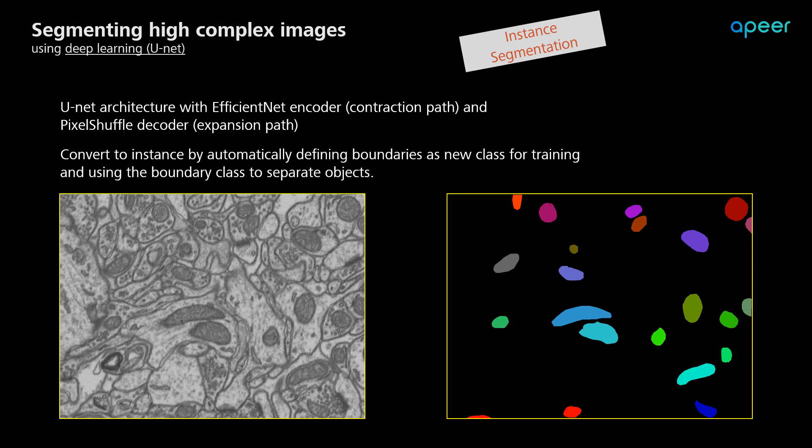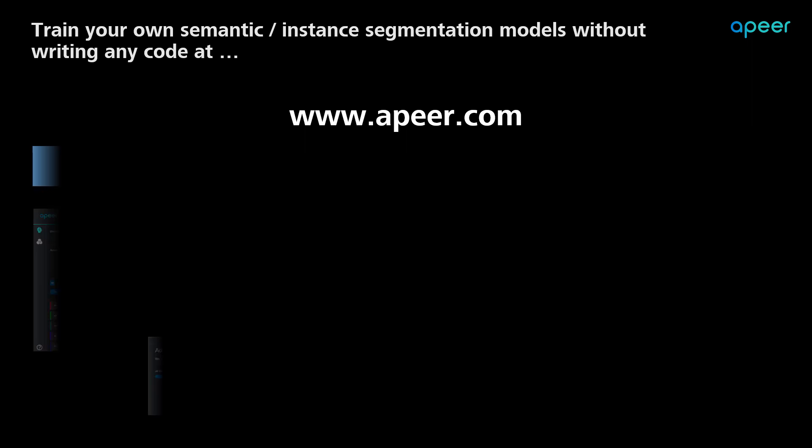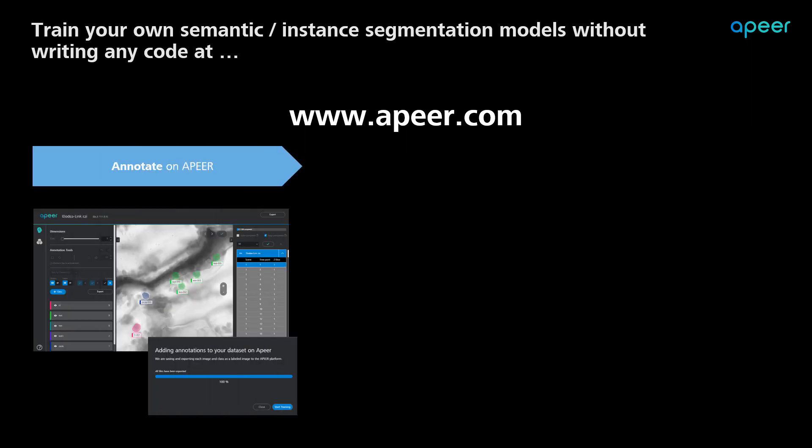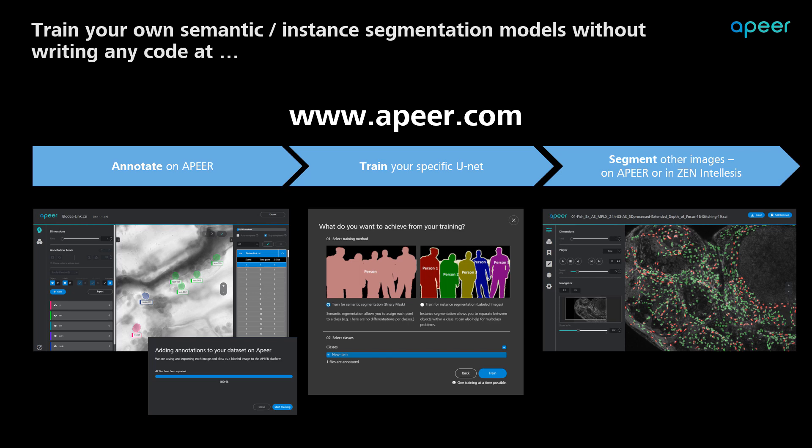Putting together these deep learning models requires you to be coding proficient. But you can use them on Apeer.com without the need to write any code. You can train your own models by annotating your images, training your U-Net by selecting either semantic or instance segmentation, and later using the trained model to segment your future images. Please sign up for your free account today at www.apeer.com and get started with your image segmentation. Thank you.